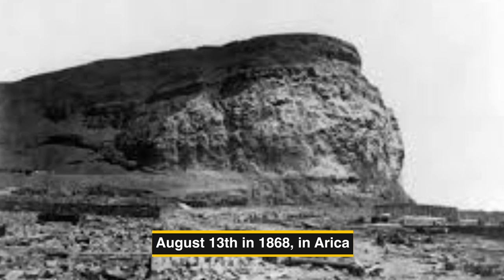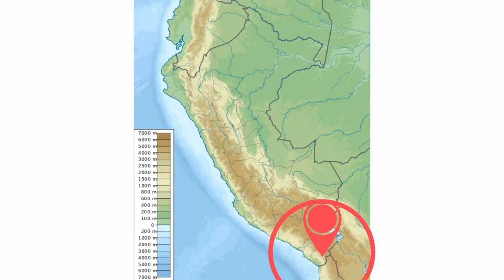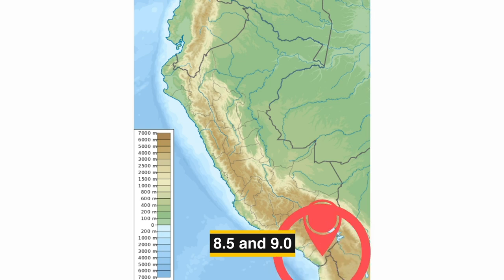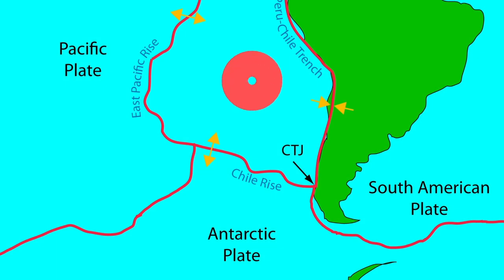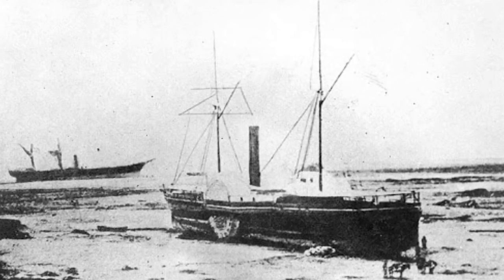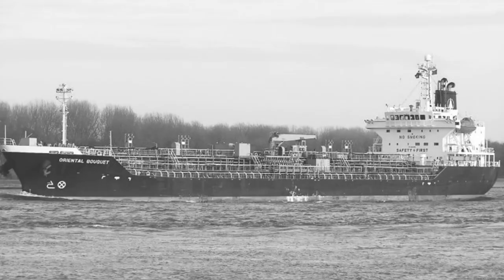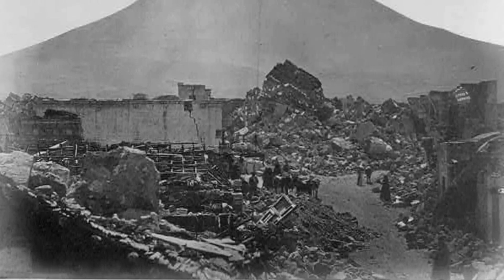On August 13th, 1868, a strong earthquake struck Arica, Peru (now part of Chile), with an estimated magnitude of 8.5 to 9.0. The earthquake occurred along the boundary between the Nazca Plate and the South American Plate, causing almost complete destruction in the southern part of Peru, including Arica, Tacna, Moquigua, Molendo, Ilo, Iquique, Torata, and Arquipa, resulting in an estimated 25,000 casualties and many shipwrecks.